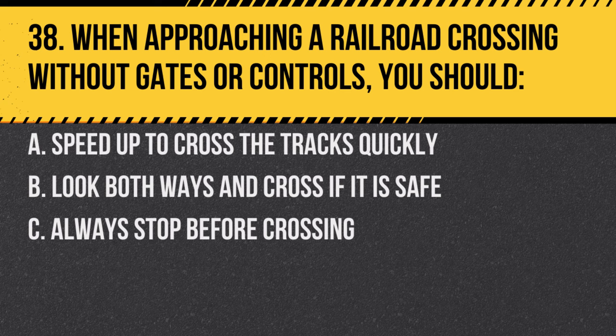Question 38. When approaching a railroad crossing without gates or controls, you should: a. Speed up to cross the tracks quickly. b. Look both ways and cross if it is safe. c. Always stop before crossing. Answer: b. Look both ways and cross if it is safe. Always be cautious at uncontrolled railroad crossings.